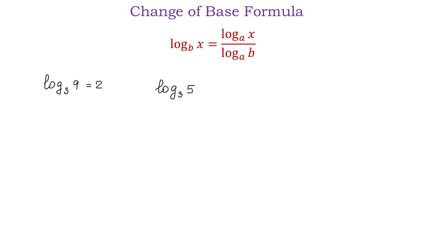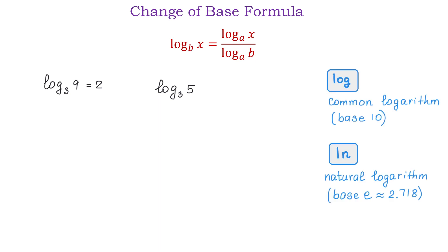Many calculators know how to evaluate logarithms of any base. But let's say that you have a calculator that can evaluate only common logarithms or natural logarithms. This means that your calculator has one button for common logarithm, which is a logarithm that uses base 10, and another button for natural logarithm, which uses base e that is approximately 2.718.